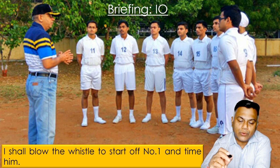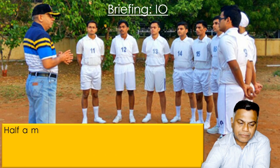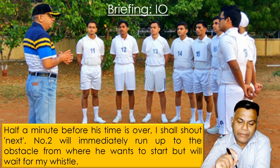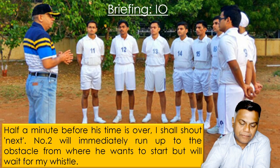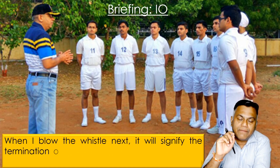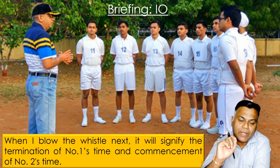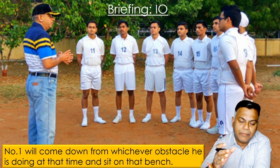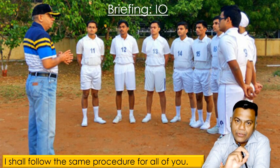I shall blow the whistle to start number one and time him. Half a minute before his time is over, I shall shout 'next.' Number two will immediately run up to the obstacle from where he wants to start but will wait for my whistle. This will also indicate to number one that half a minute is left. When I blow the whistle next, it will signify the termination of number one's time and commencement of number two's time. Number one will come down from whichever obstacle he is on and go sit on the bench. I shall follow the same procedure for all of you.